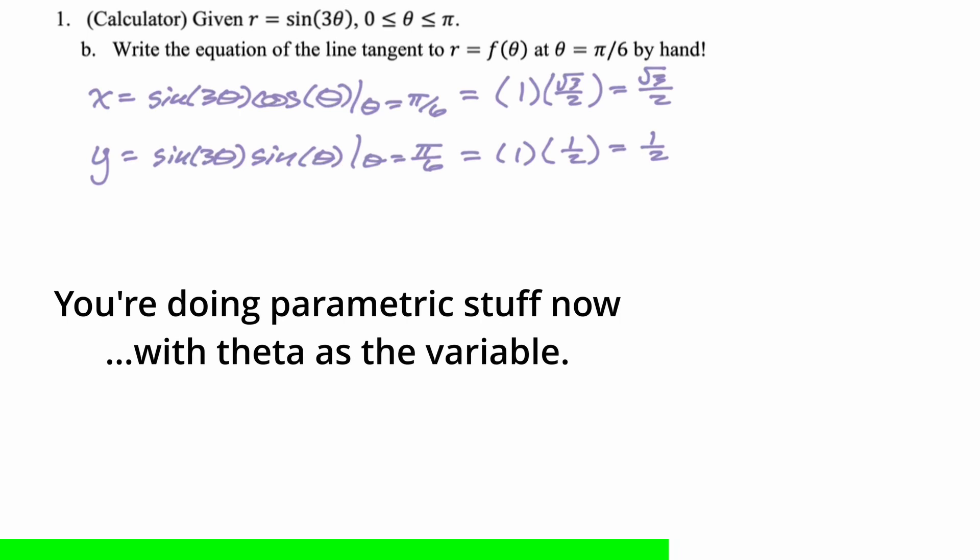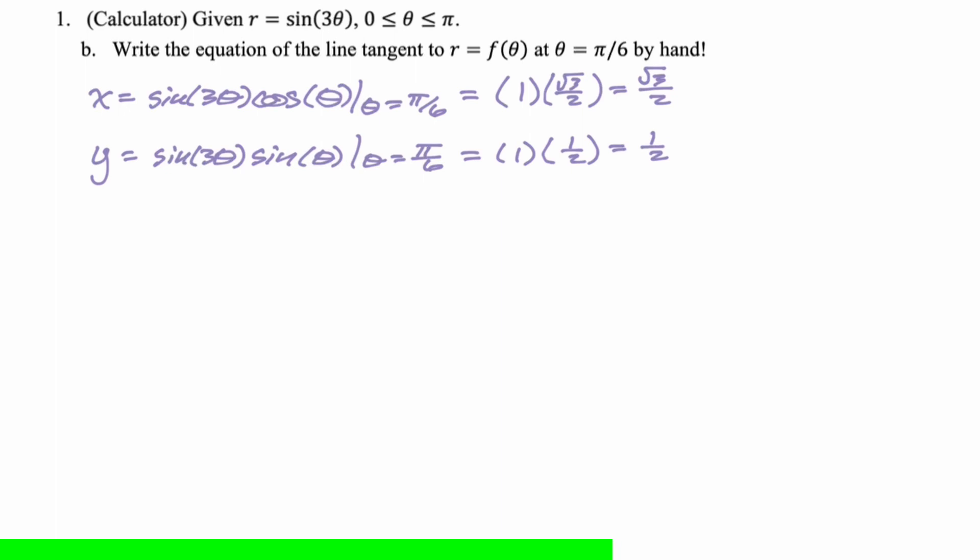All right, so to find the slope, what we need to do is use the fact that we have written these parametrically, and dy dx is just dy d theta over dx d theta. We're going to need dx d theta and dy d theta. So dx d theta, product rule. It's going to be first, which is sine of 3 theta. Derivative of the second, negative sine of theta. Plus second, which is cosine of theta. Derivative of the first, which is 3 cosine of 3 theta. We need to evaluate this at pi over 6. Something kind of interesting happens, because the cosine of pi over 2 is 0, which means this whole second part just drops out. So to evaluate this, we really just need to do the sine of pi over 2, which is 1, times the negative of the sine of pi over 6, so negative 1 half, is our final answer there.